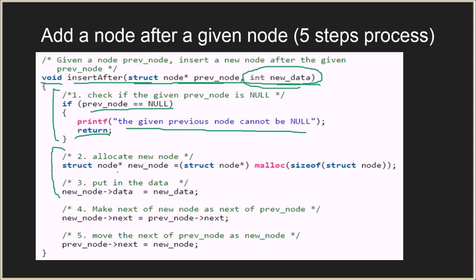If the previous node is not null, meaning the linked list has at least one element, we allocate the new node and insert the data part. Then in steps four and five, we update the next pointer of the new node to be the next pointer of the previous node — so whatever was the next element of the previous node now becomes the next element of the new node. Finally, the next pointer of the previous node is updated to point to the new node, since we are inserting the element right after it.